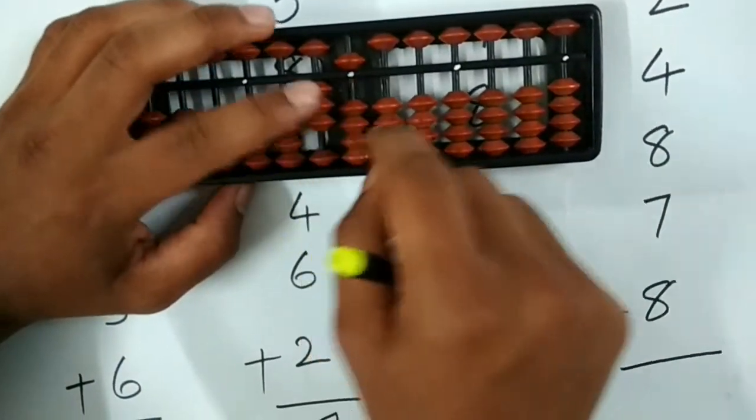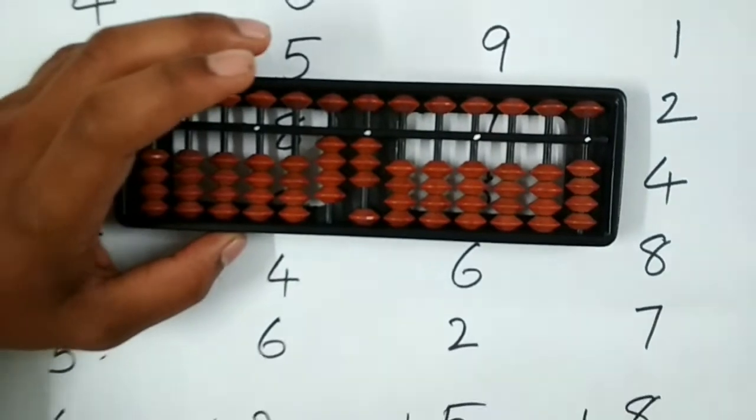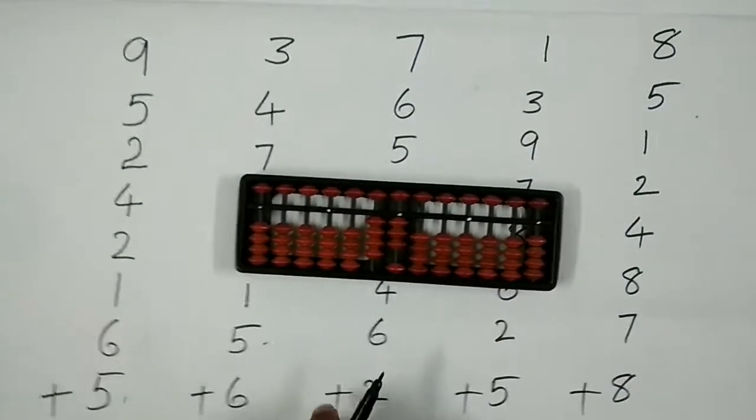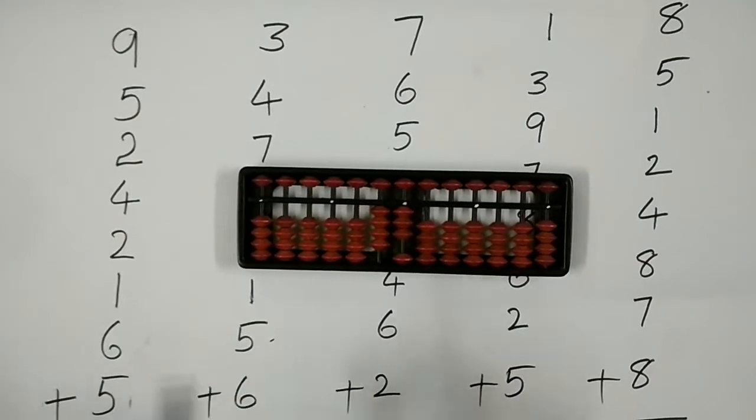7, and 8. The answer is 43. I have added these numbers on the abacus using small friends concept, big friends